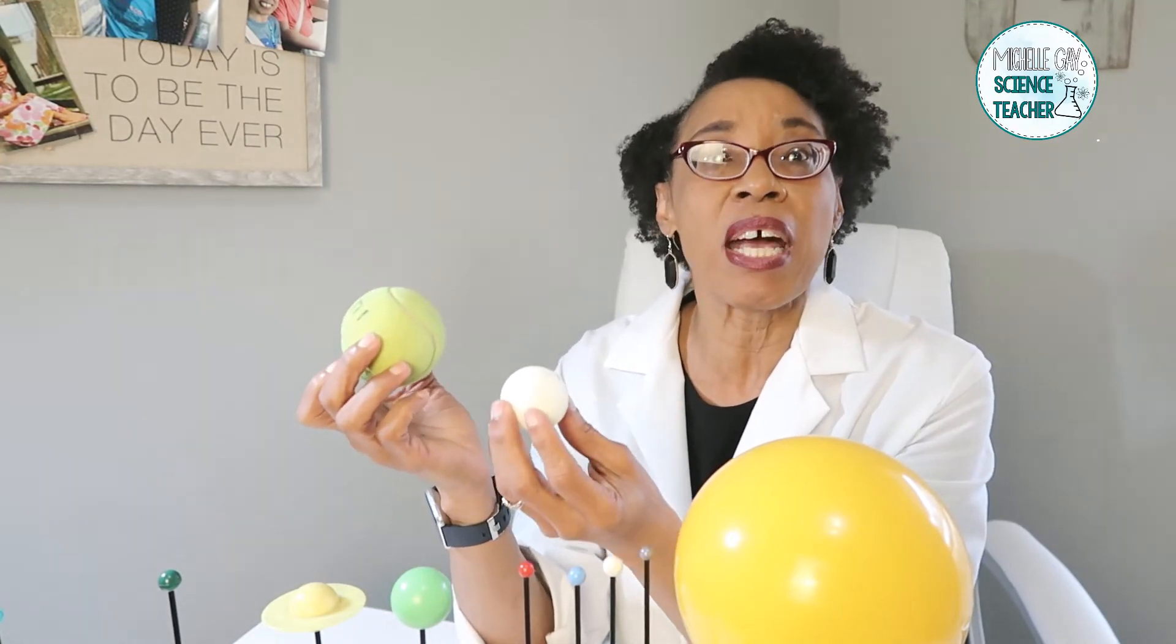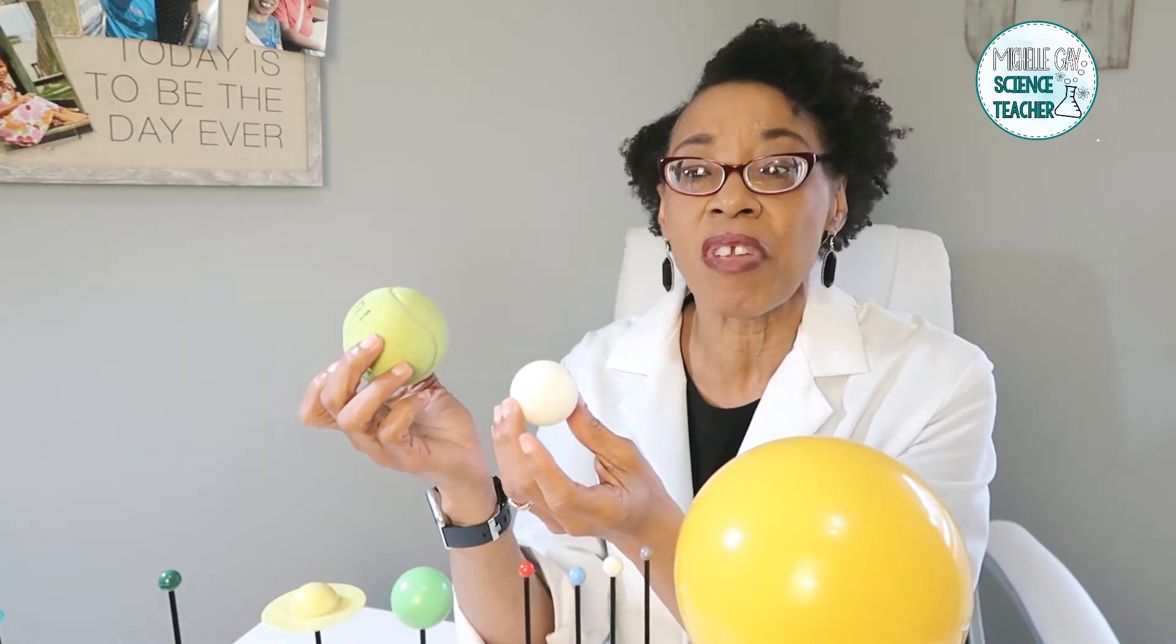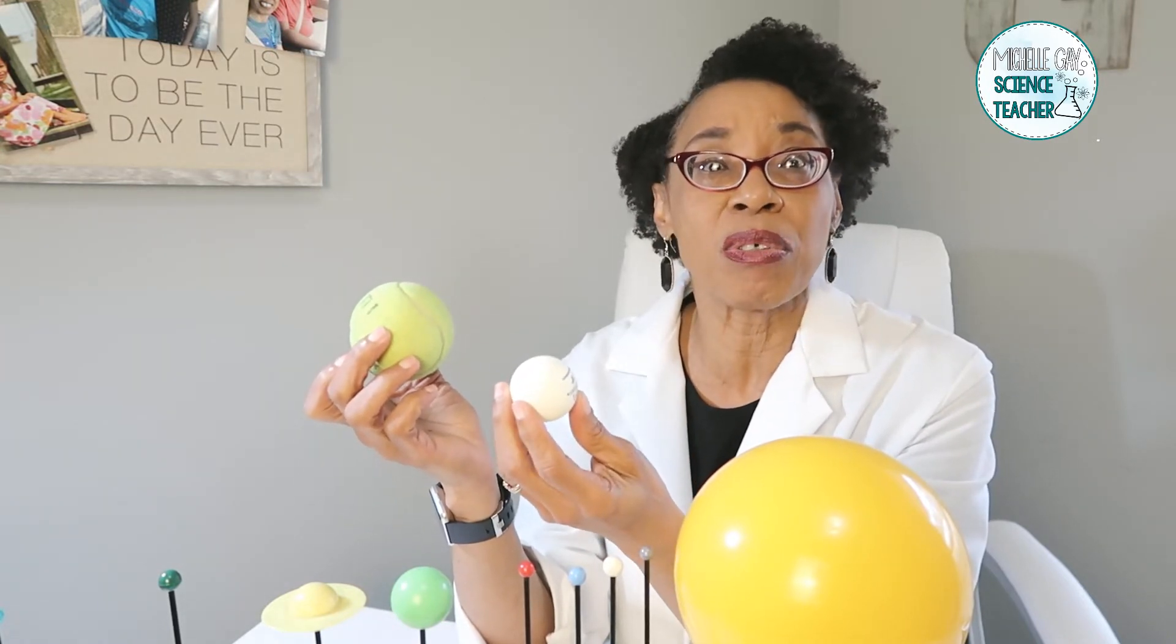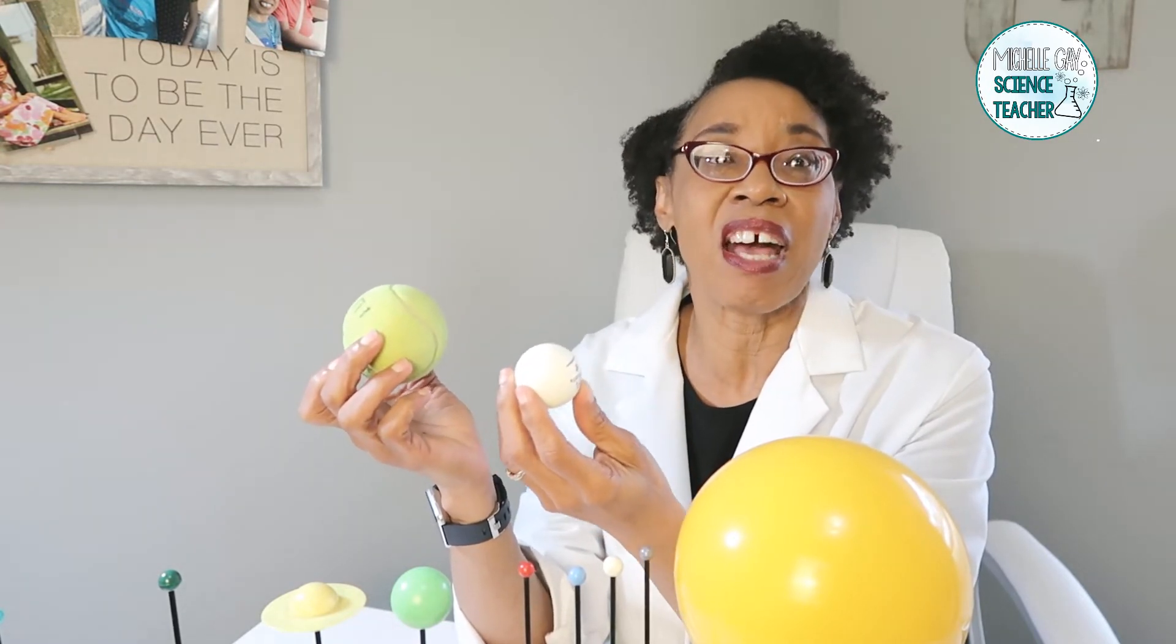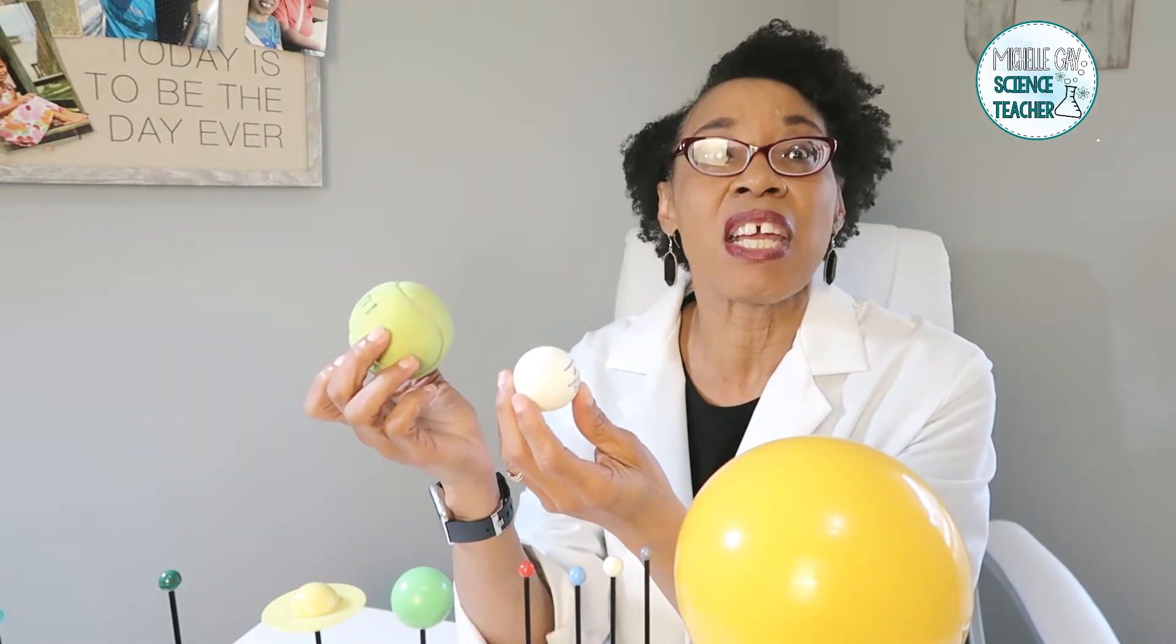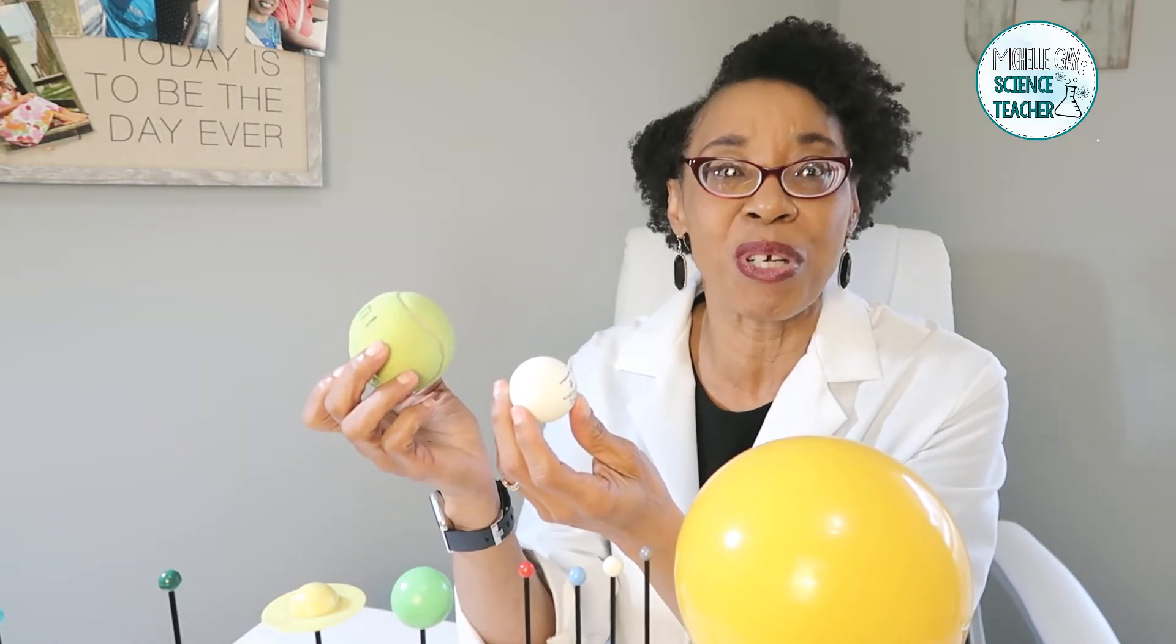Not only that, half of the moon is lit and the other half is not. We call it the dark side of the moon.